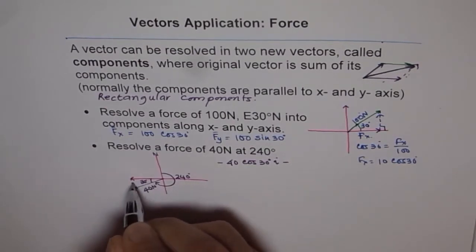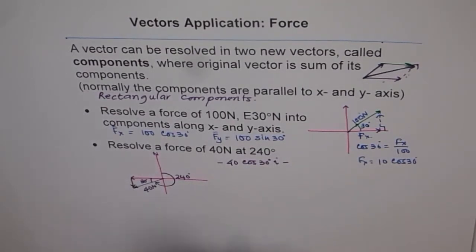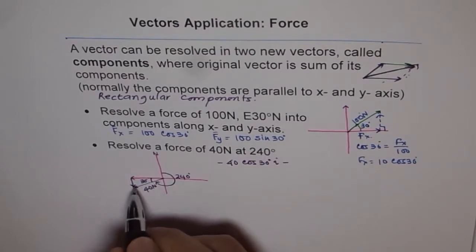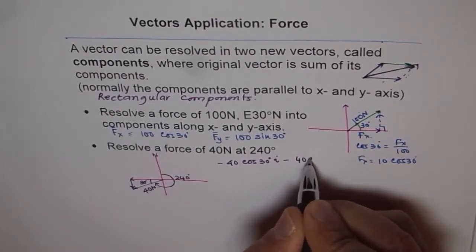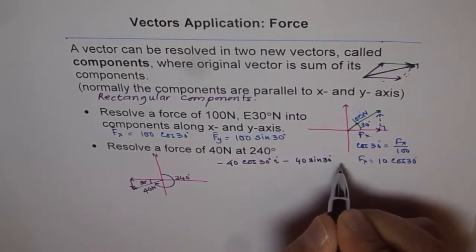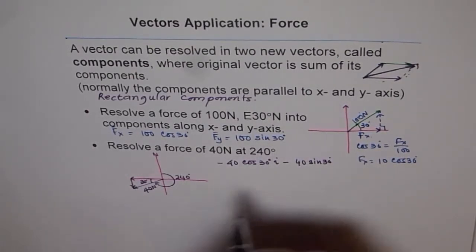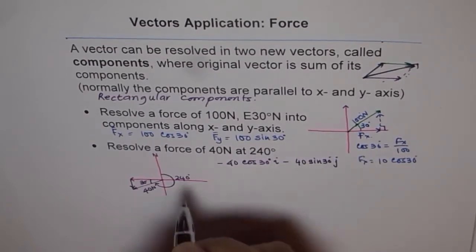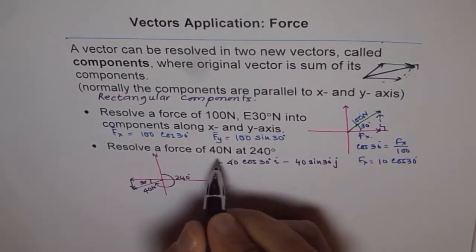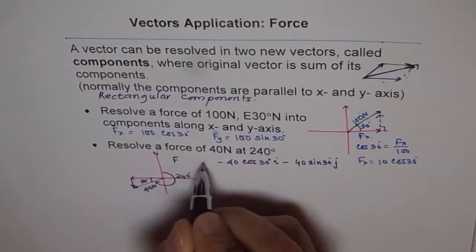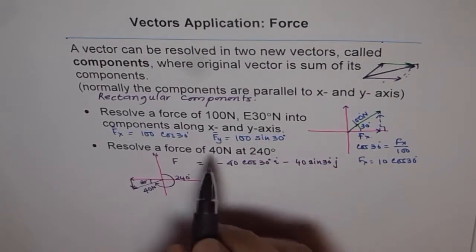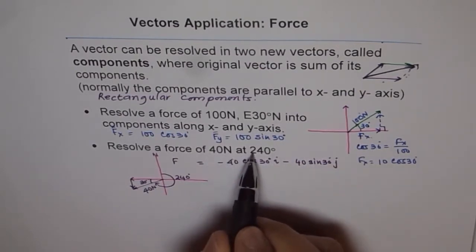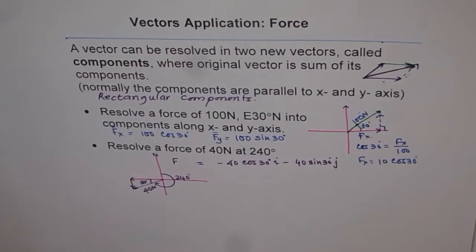The y-component corresponds to the opposite side of the right triangle, so it will be 40·sin 30°. The direction is negative since it is pointing downward, giving a negative j component. So the force of 40 newtons at 240 degrees can be written in component form as F = −40·cos 30° i − 40·sin 30° j.